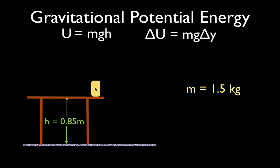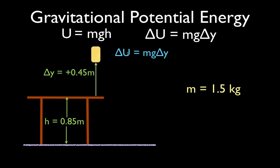These equations are really the same, but delta U and the change in potential energy usually comes from changing the Y position of the object. So let's just do that. We have an object right here. It has a mass of 1.5 kilograms, and we're going to raise the object up some height, and that height is 0.45 meters. I labeled it here as change in Y — the change in Y is plus 0.45 meters — and we're going to calculate the change in the potential energy of the object, referencing it to the point where it started at the tabletop.